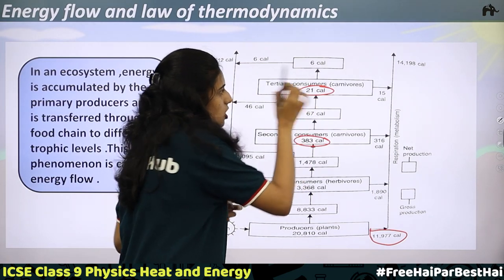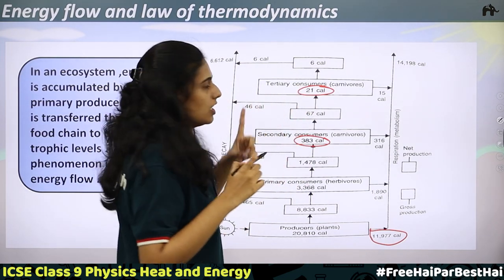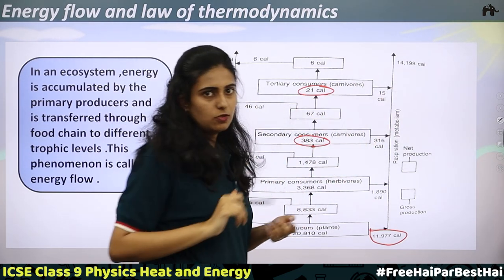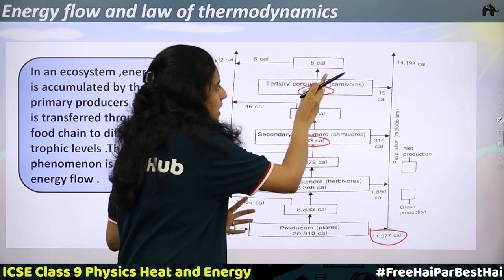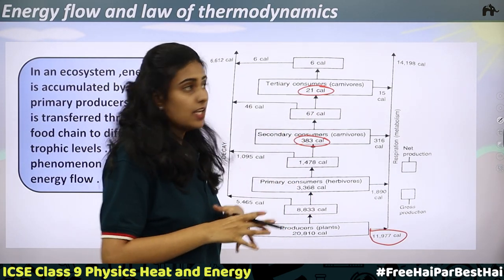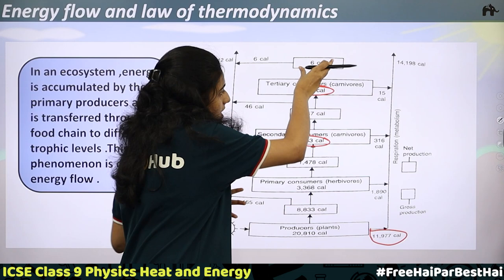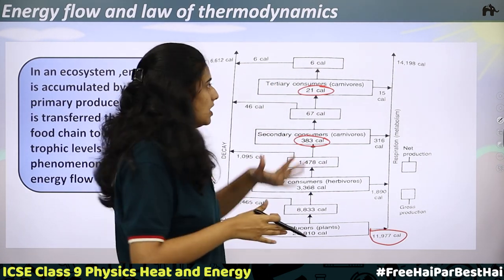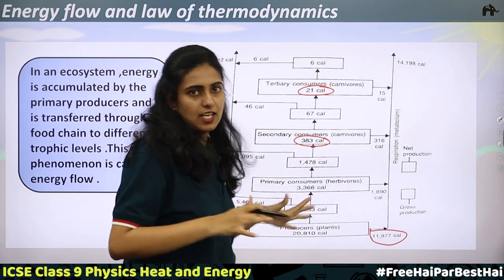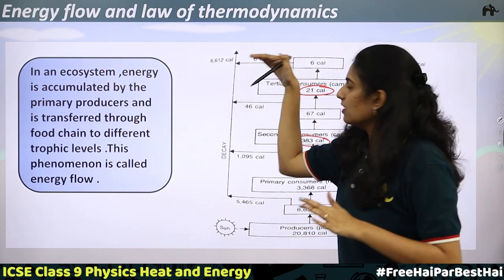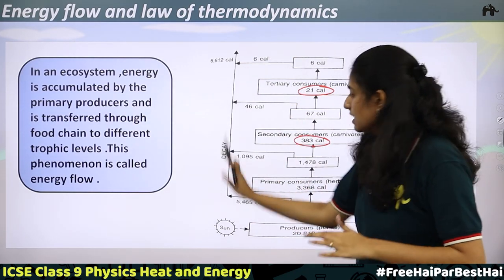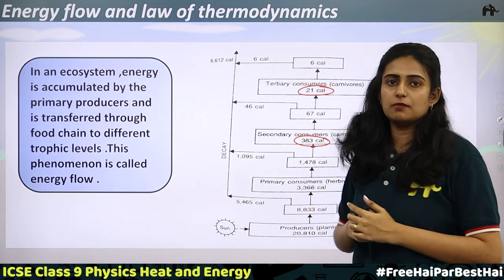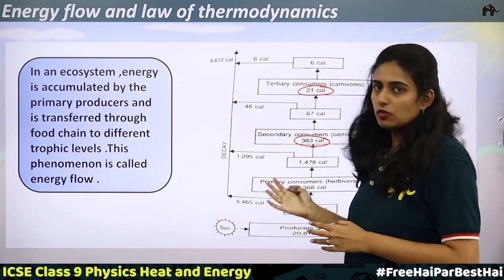So this is how energy flows. You can see that beyond the tertiary level it cannot go; the energy gets decayed. At the tertiary level it is stopping. Some energy is getting lost at every stage. This is how the process works — the energy flow diagram is very important.